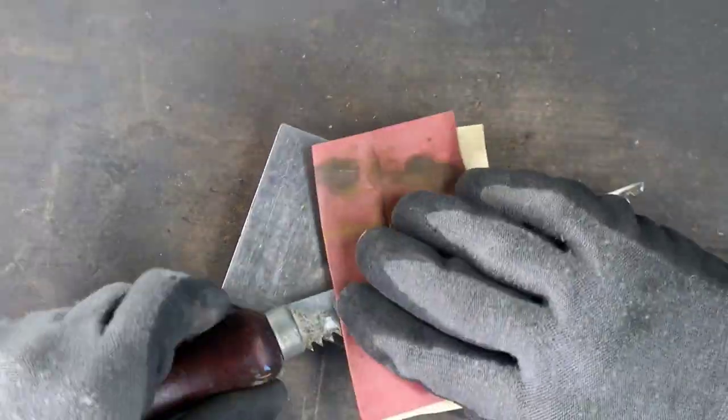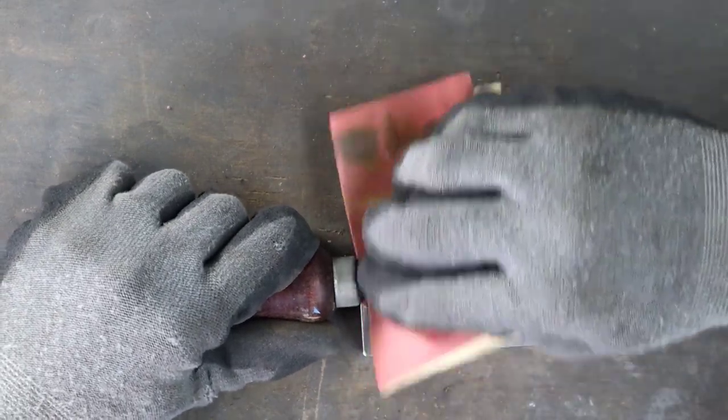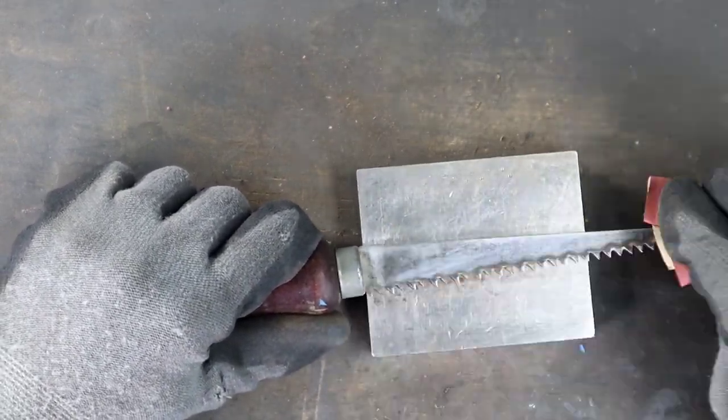Now the Stanley stamp on the blade means the pits cannot be taken out. If you sand to the bottom of the rust pits, you're going to sand to the bottom of the stamp and completely remove it.